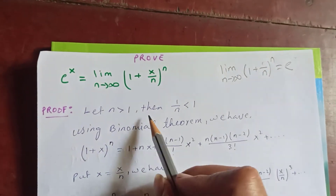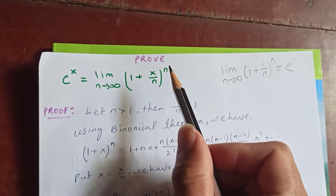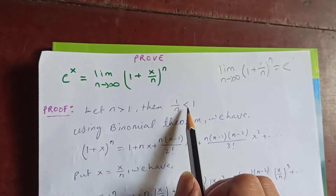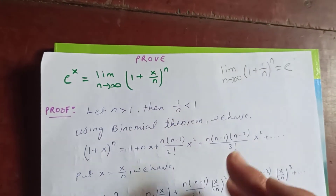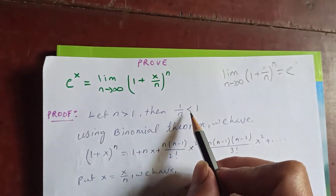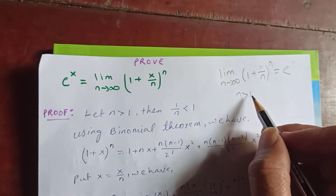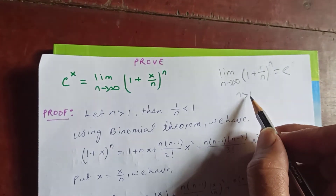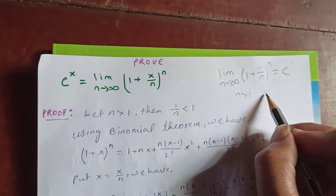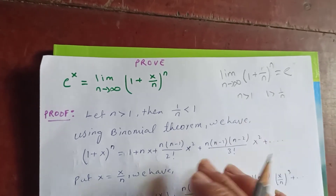Now let n be greater than 1. This n must be greater than 1 always, meaning 1/n will be less than 1. How come? Since n is greater than 1, divide by n, so 1 is greater than 1/n, meaning 1/n is less than 1.